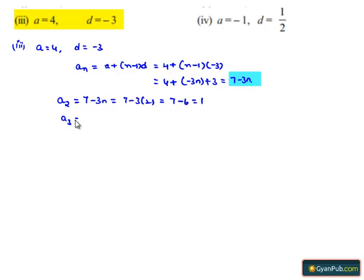And here the third term will be equal to, instead of n we need to substitute 3, then we get 7 minus 3 times 3, that is equal to 7 minus 9, which is equal to minus 2.